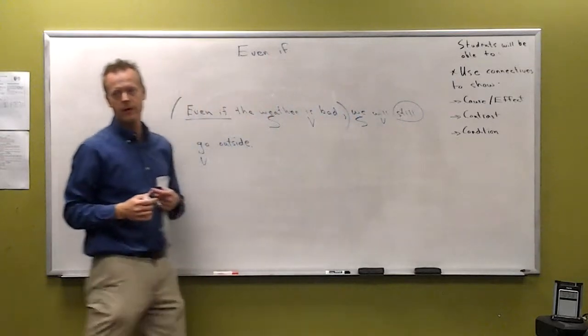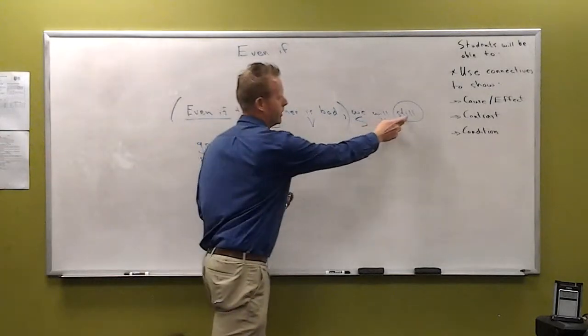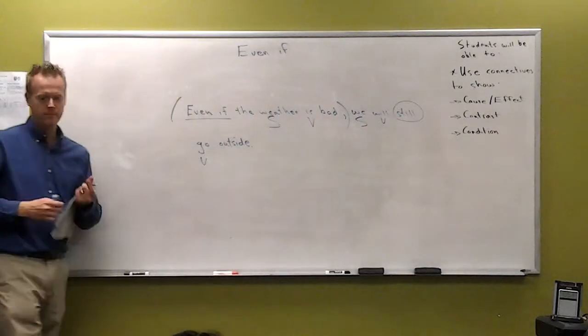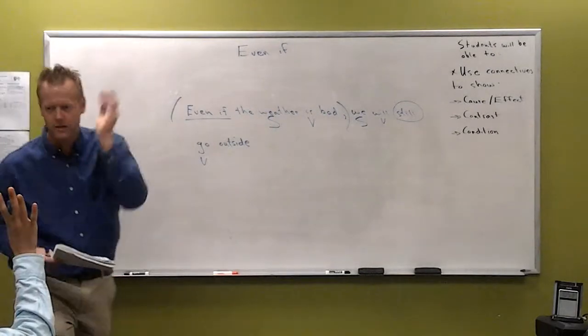By the way, when you use adverbs of frequency like always, still—if there's an auxiliary verb with a main verb, stick them in between. If there's just a be verb, stick it after the be verb. We will always be here for you. People never seem to know where to put that thing.